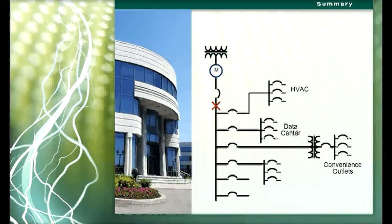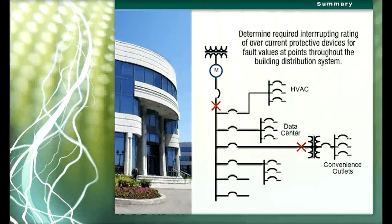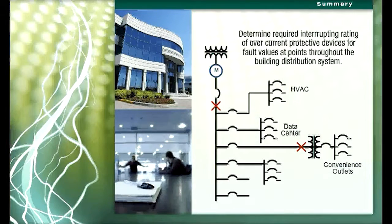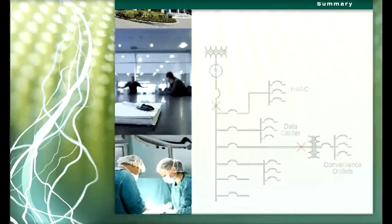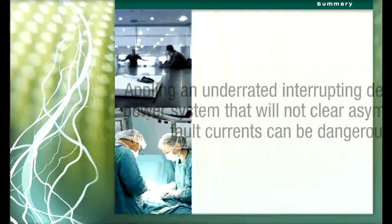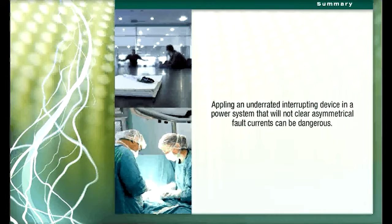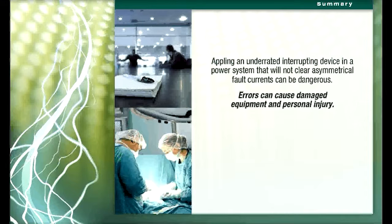The obvious concern for determining the various fault values at points throughout the building distribution system is to determine the required interrupting rating of the overcurrent protective devices. It is generally not problematic to interrupt overload current, but it can be dangerous to apply an underrated interrupting device in a power system that will not clear asymmetrical fault currents. The result of such an error can be damaged equipment and personal injury.